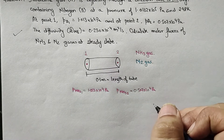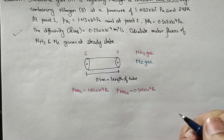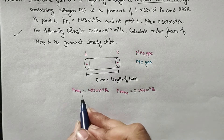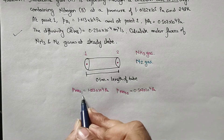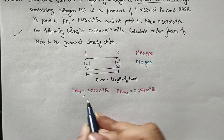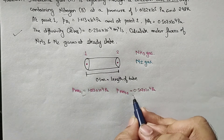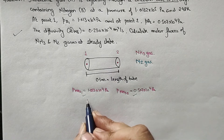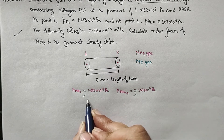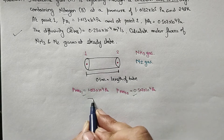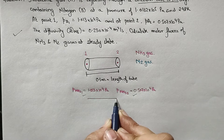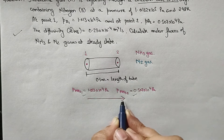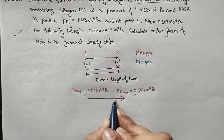From these values you can understand one very simple concept. The concentration of ammonia is higher at point 0.1 and lower at point 0.2. So in that case, the direction of ammonia diffusion will be from 0.1 toward 0.2.